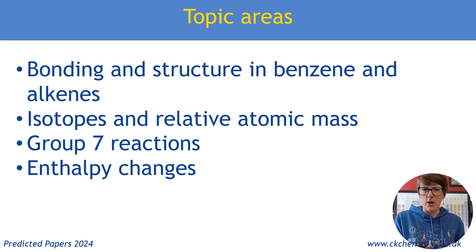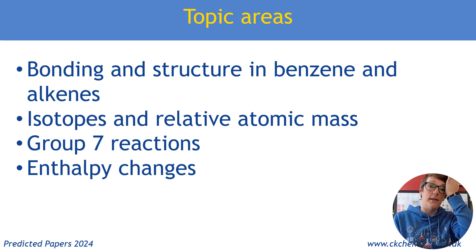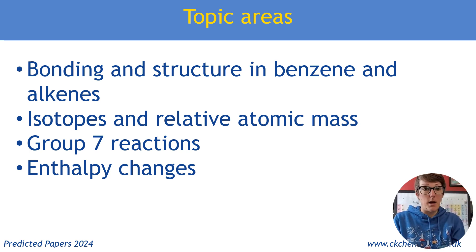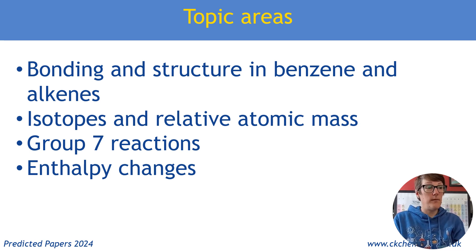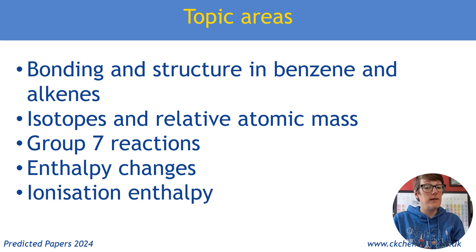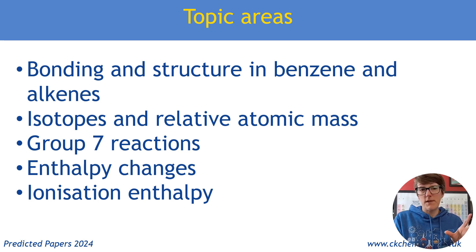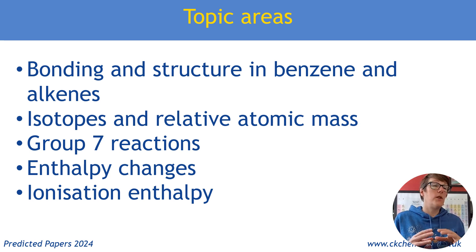Enthalpy changes - not a great deal in Paper 1 on that. So I'm thinking Hess's law, and also experiments for enthalpy changes, which we'll look at in a moment. Just being able to calculate them from experiment and from Hess cycles as well. And ionisation enthalpy - again, we've had a lot of periodicity in terms of melting and boiling point, perhaps not so much ionisation enthalpy. And that is another area for those shorter questions.